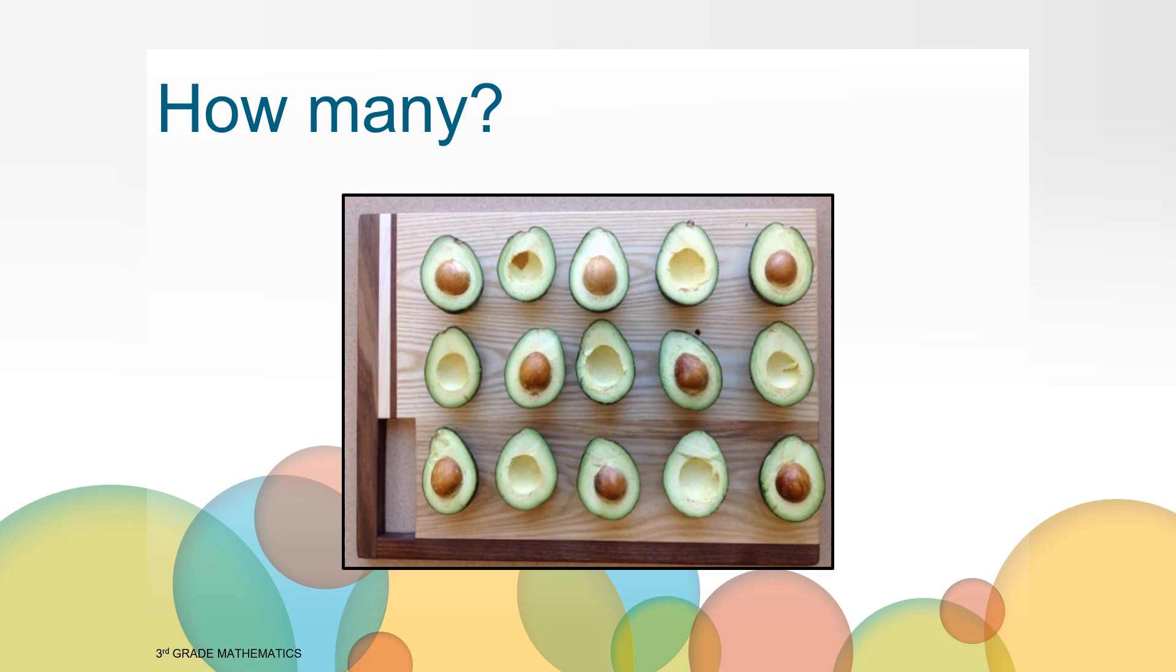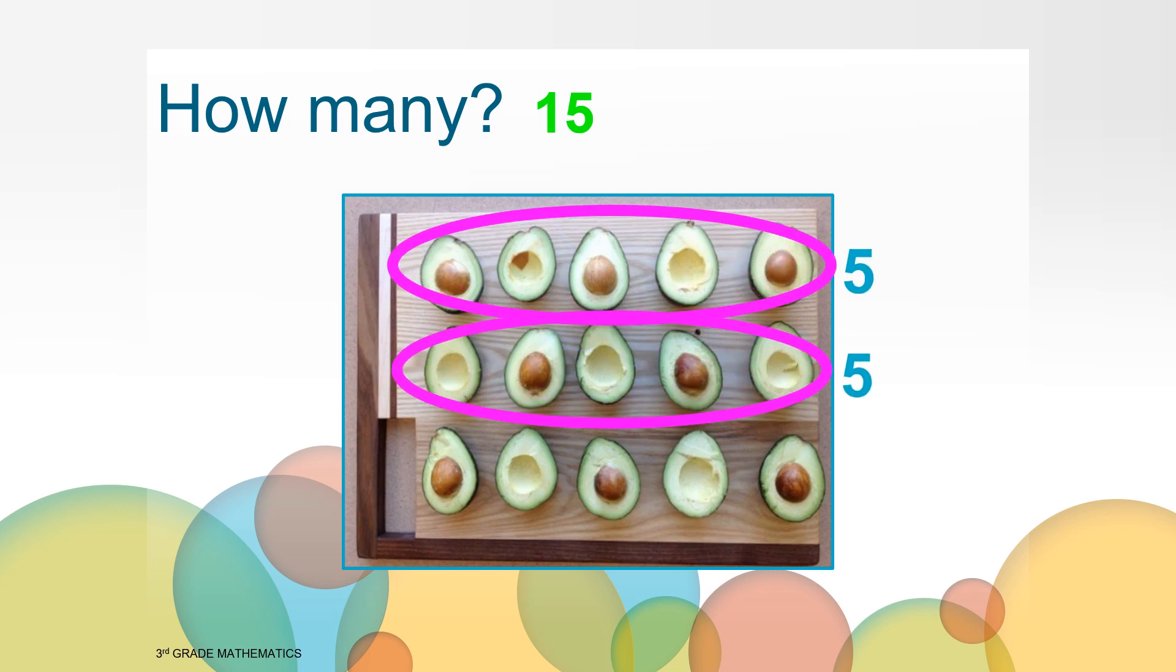Now I want you to think about how many do you see. You may have said 15. How do you see 15? You might have noticed that the avocados are arranged in three rows of five, so that gives us 15.